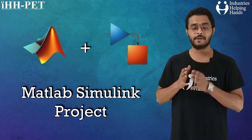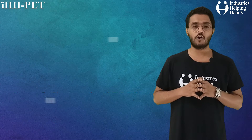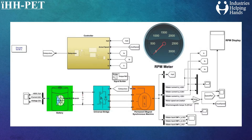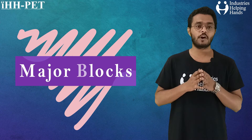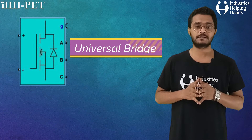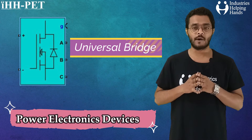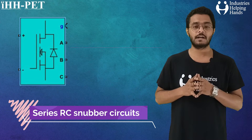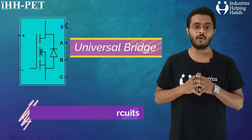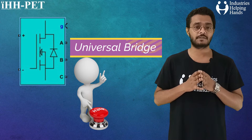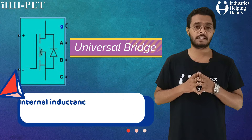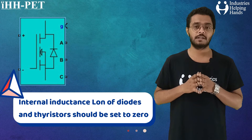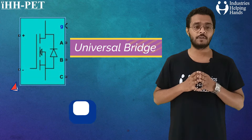This MATLAB simulation project is based on speed control of a permanent magnet synchronous machine using Hall effect sensor logic. The major blocks used in this model include first the universal bridge, which implements a bridge of selected power electronics devices. Series RC snubber circuits are connected in parallel with each switch device. When the model is discretized, the internal inductance of diodes and thyristors should be set to zero.